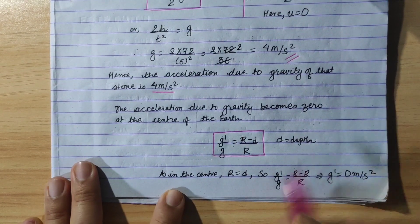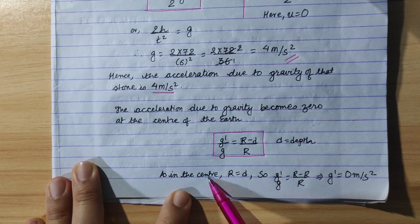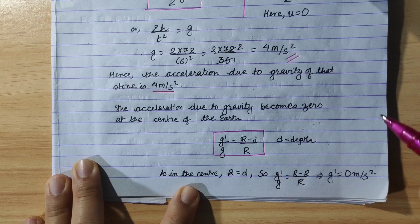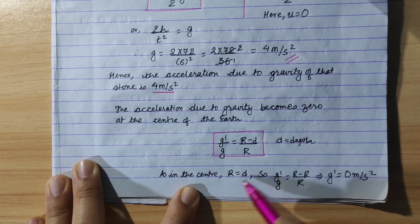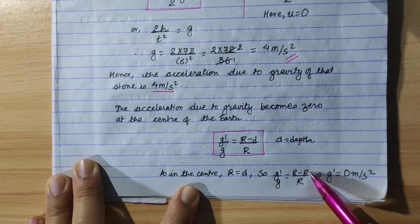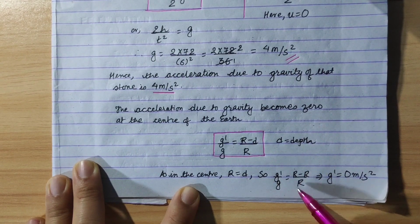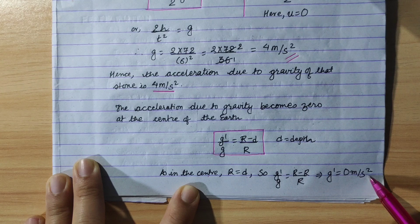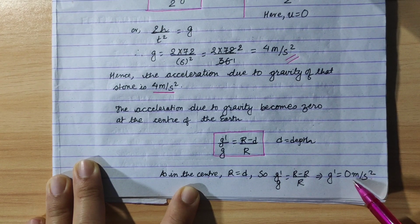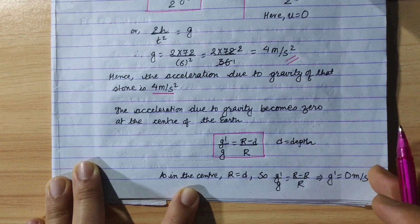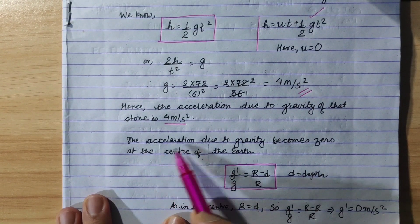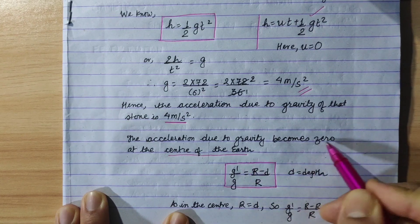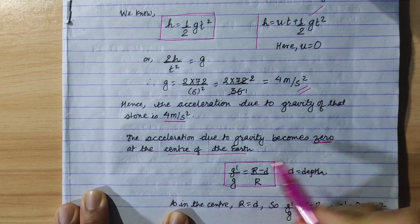Now, we have to look at the center of the earth. At the center of the earth, the depth from the surface equals the radius, so the acceleration due to gravity becomes 0. The acceleration due to gravity becomes zero at the center of the earth.